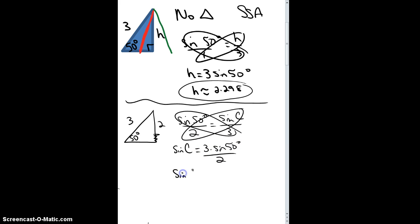So sine of C is equal to 3 sine of 50 degrees all over 2. So I get sine of C equals, well, it's going to be that same value up here, except now it's divided by 2. So that's approximately 1.149.